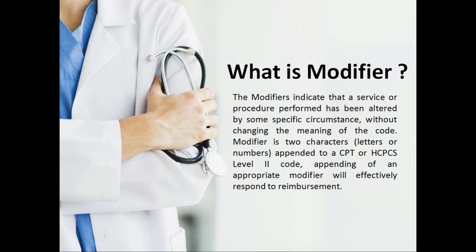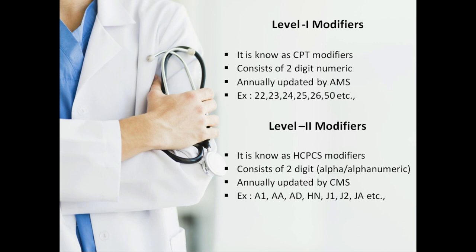The modifier is two characters that are appended to CPT or HCPCS Level II codes. Appending an appropriate modifier will effectively improve reimbursement — selecting the right modifier can give 20 to 30 percent additional reimbursement from the actual allowed amount. Level 1 modifiers are known as CPT modifiers, consisting of two-digit numerics, and are annually updated by the AMA (American Medical Association).